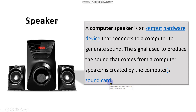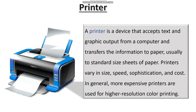The sound card is a necessity for recording and producing sound. Next, the printer. A printer is a device that accepts text and graphic output from a computer and transfers the information to paper — usually to a standard size sheet such as A4, which we commonly see in schools. Printers vary in size, speed, sophistication and cost. In general, more expensive printers are used for higher resolution color printing.